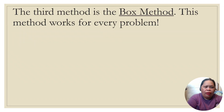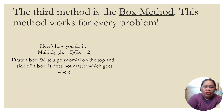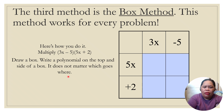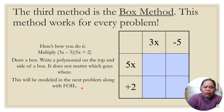The third method is the box method. This method works for every problem. Here's how you do it — multiply (3x − 5) times (5x + 2). Draw a box, write one polynomial on the top and the other on the side of the box. It does not matter which goes where. So we place 3x and −5 along one axis and 5x and +2 along the other.